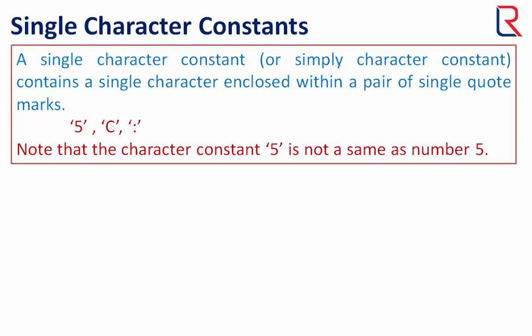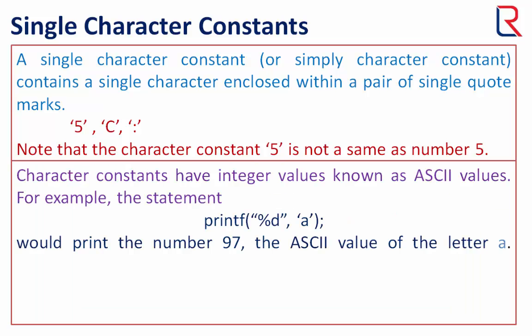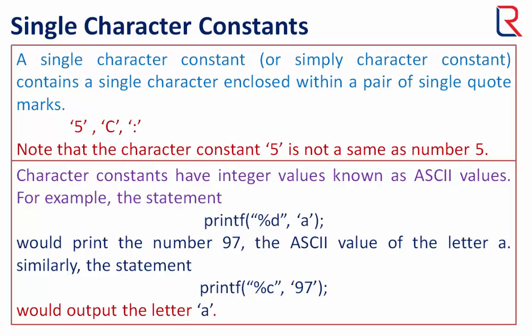Character constants have integer values known as ASCII values. For example, the statement printf("%d", 'a') would print the number 97, the ASCII value of the letter a. Similarly, the statement printf("%c", 97) would print the letter 'a'.